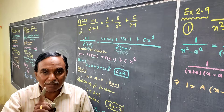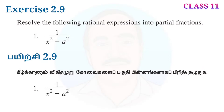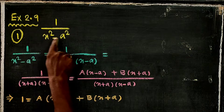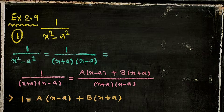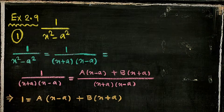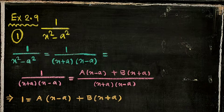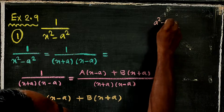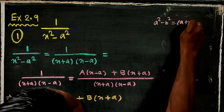The result of the partial fraction is 1 by x² minus a². Now, a² minus b² is equal to the formula a plus b into a minus b — the sum of two numbers into the difference of two numbers.